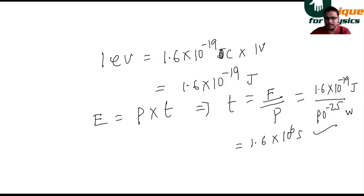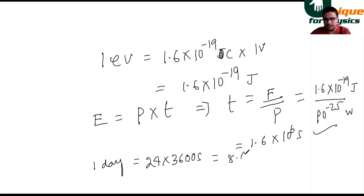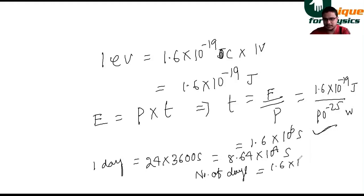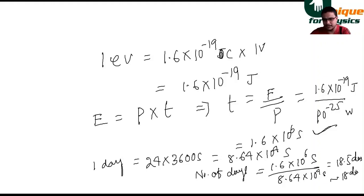Converting to days: one day is 24 hours × 60 minutes × 60 seconds, which equals 8.64 × 10⁴ seconds. Dividing 1.6 × 10⁶ seconds by 8.64 × 10⁴ seconds gives approximately 18.5 days — nearly 18 to 19 days for the electron to gain one electron volt at the rate of 10⁻²⁵ watt.